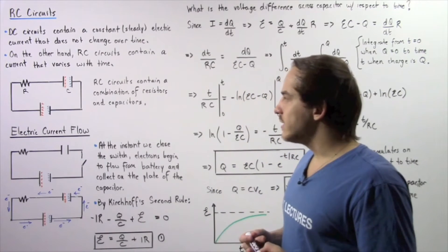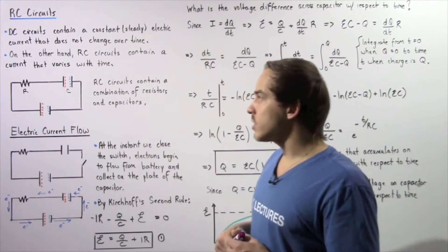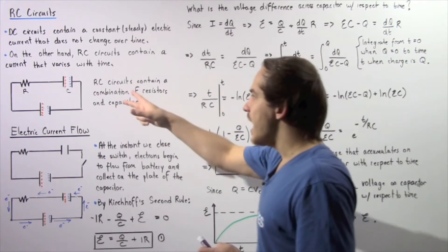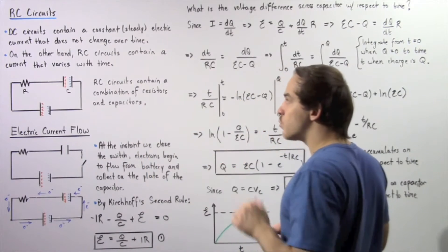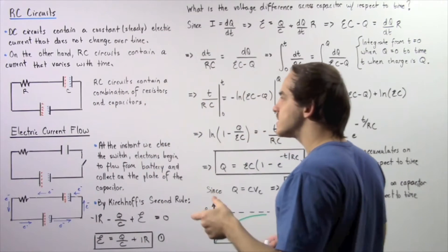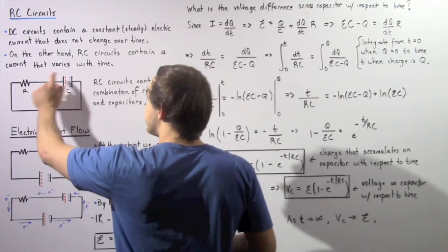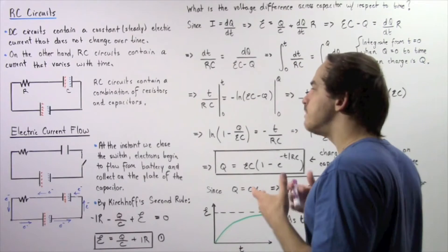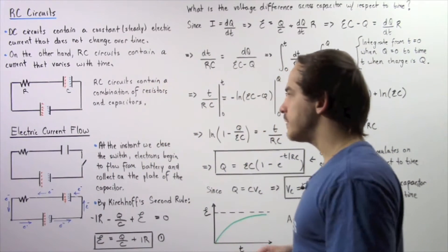Let's begin by looking at an example of an RC circuit. An RC circuit essentially contains a combination of resistors and capacitors — that's why we call it an RC circuit; RC stands for resistor-capacitor. We have one resistor and one capacitor connected in series, and we also have a battery that creates a voltage difference.